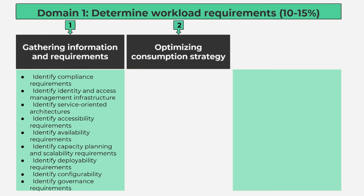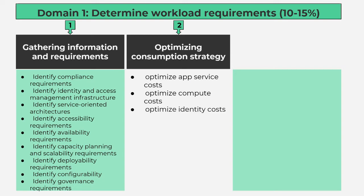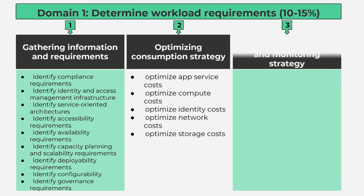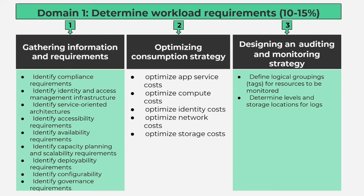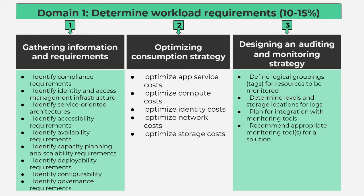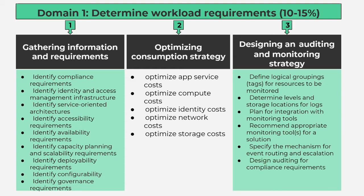Number 2, Optimizing Consumption Strategy contains 5 subtopics: optimize app service costs; optimize compute costs; optimize identity costs; optimize network costs; optimize storage costs. Number 3, Designing an Auditing and Monitoring Strategy contains 7 subtopics: define logical groupings for resources to be monitored; determine levels and storage locations for logs; plan for integration with monitoring tools; recommend appropriate monitoring tools; specify the mechanism for event routing and escalation; design auditing for compliance requirements; design auditing policies and traceability requirements.